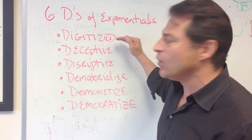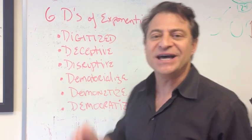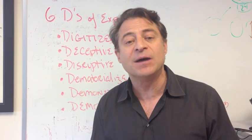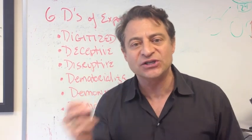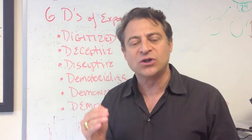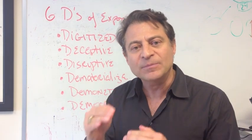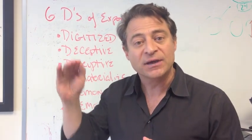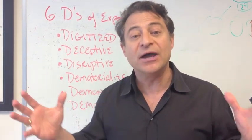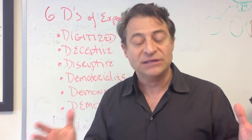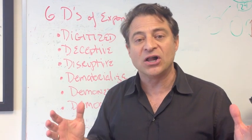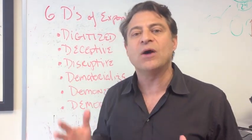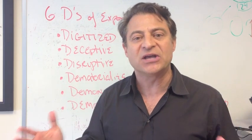So here are the six D's. Number one: Digitized. Anything that becomes digitized becomes an information science, hops on Moore's Law, and becomes something that can grow exponentially. So as bio becomes digitized, biotechnology is literally growing in power at exponential rates.